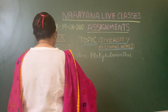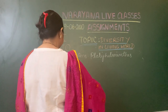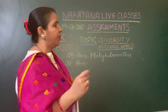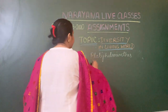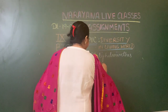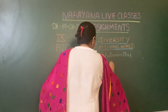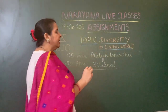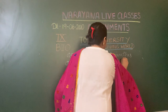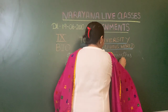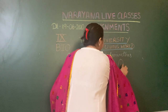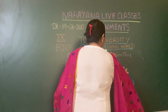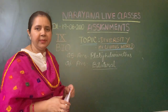Question number six: the body plan in Platyhelminthes shows dash symmetry. The answer is bilateral symmetry. Bilateral means the body of the organism can be divided equally into two equal halves. So Platyhelminthes shows bilateral symmetry.